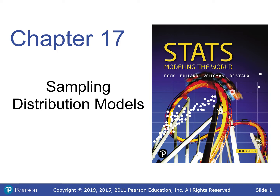A sampling distribution is what happens when you take every sample from a population of a specific size. So if we wanted a sampling distribution of size 10 from a high school population, it would need every single combination of 10 people, and then we'd look at the mean or proportion from each of those samples.